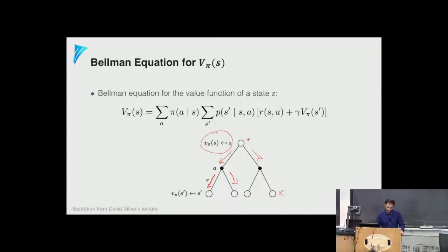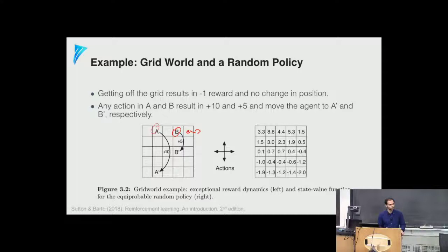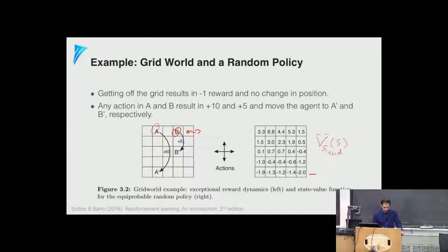Here's a grid world example from Sutton and Barto. An agent can move in four directions; bumping into a wall gives negative reward and the agent stays. Being in cell A or B teleports the agent to A' or B' with positive reward. On the right-hand side, we see the state value function V^π for every state under a random policy. States at the bottom row have pretty negative values, while states near A and B become positive due to the positive rewards.